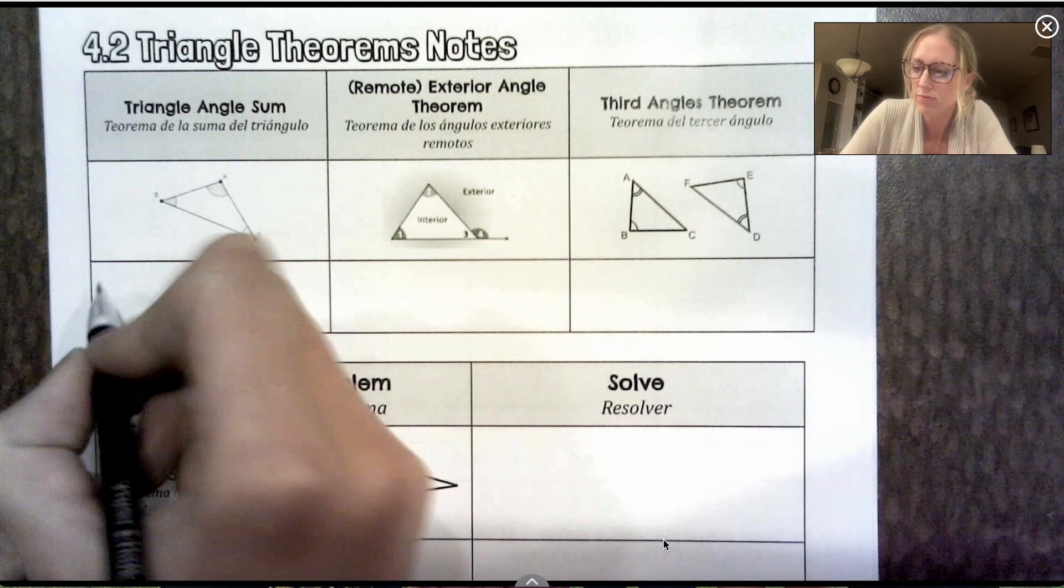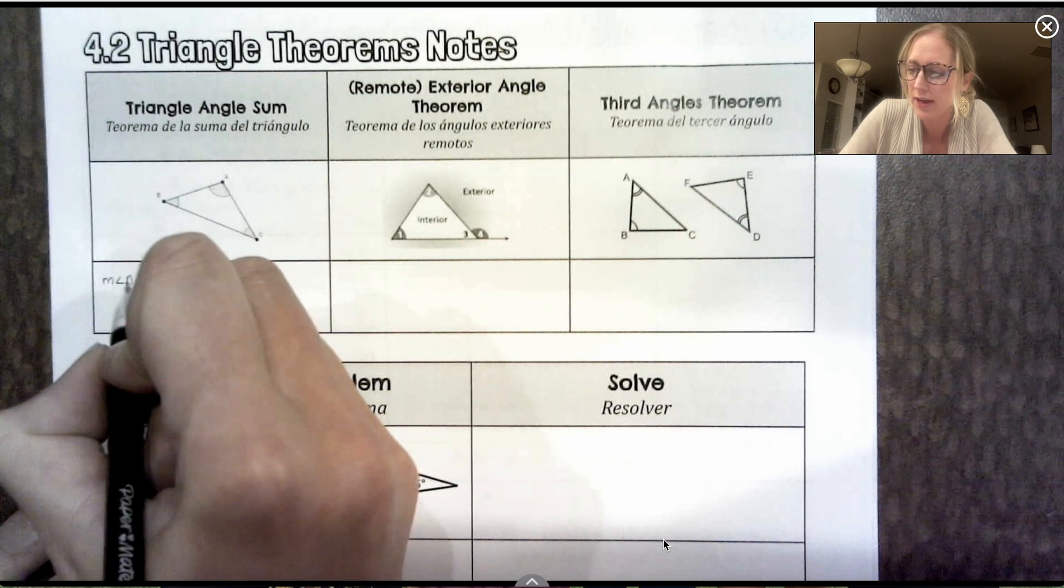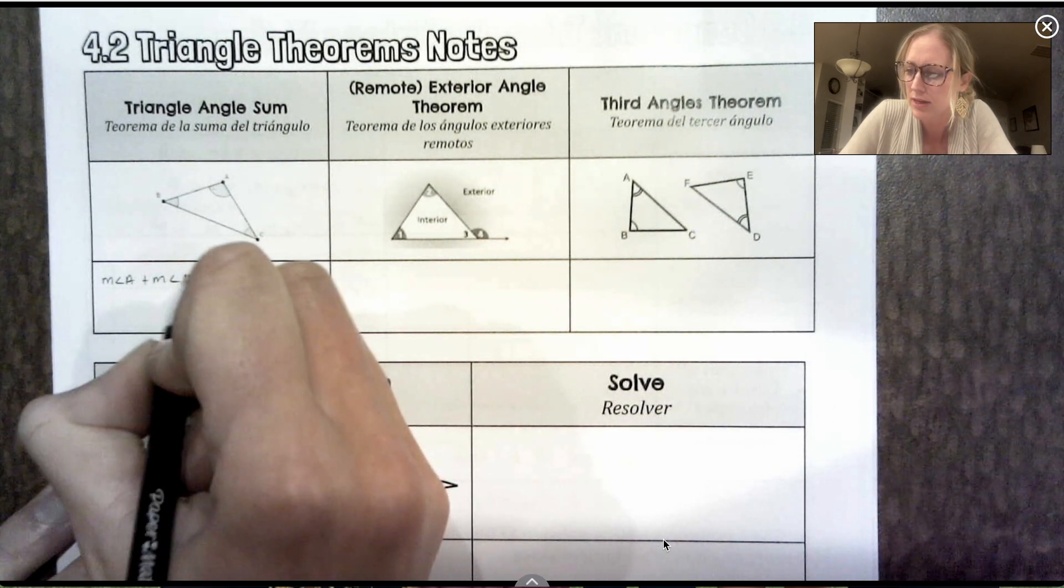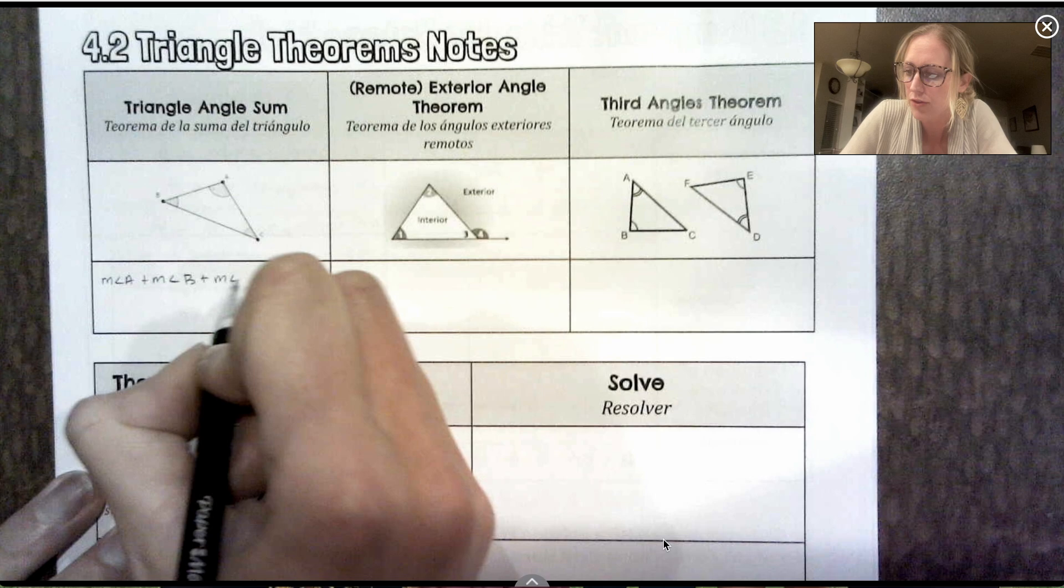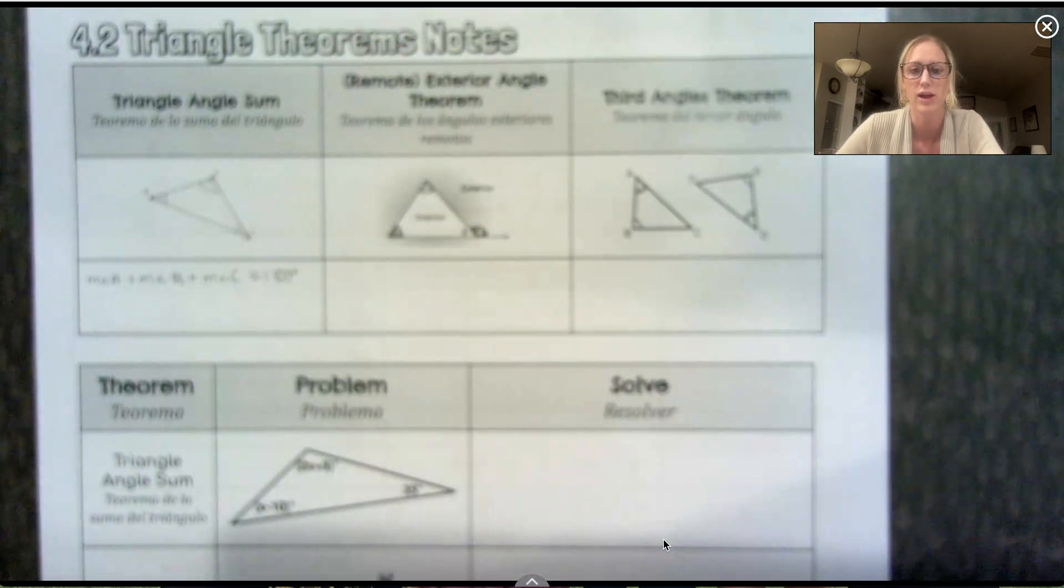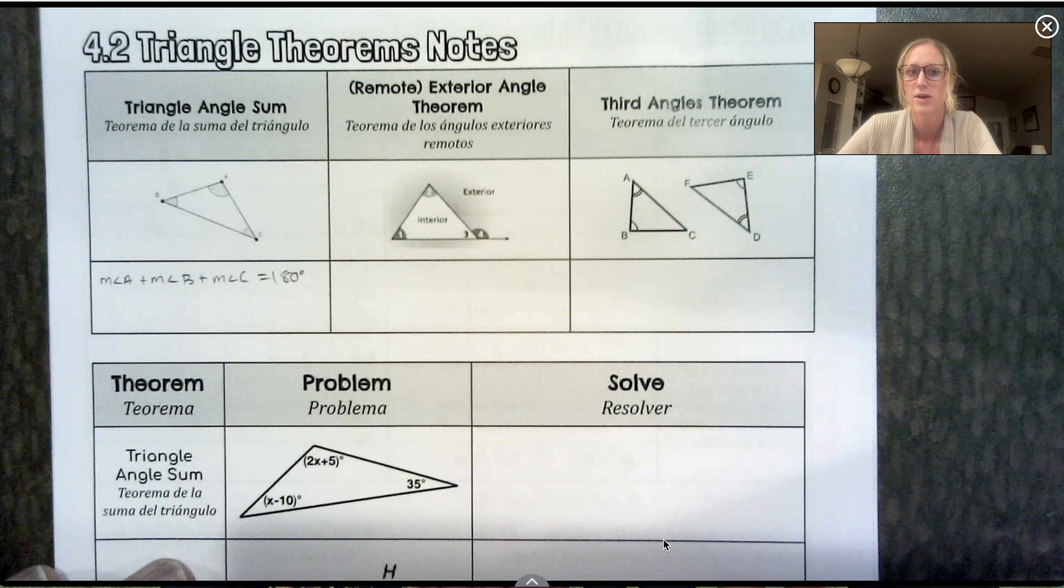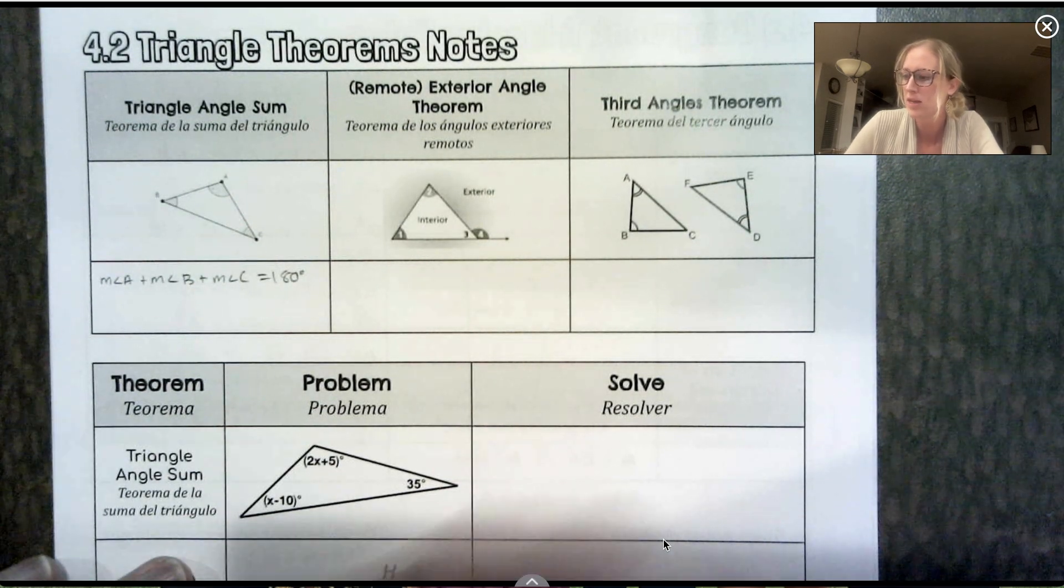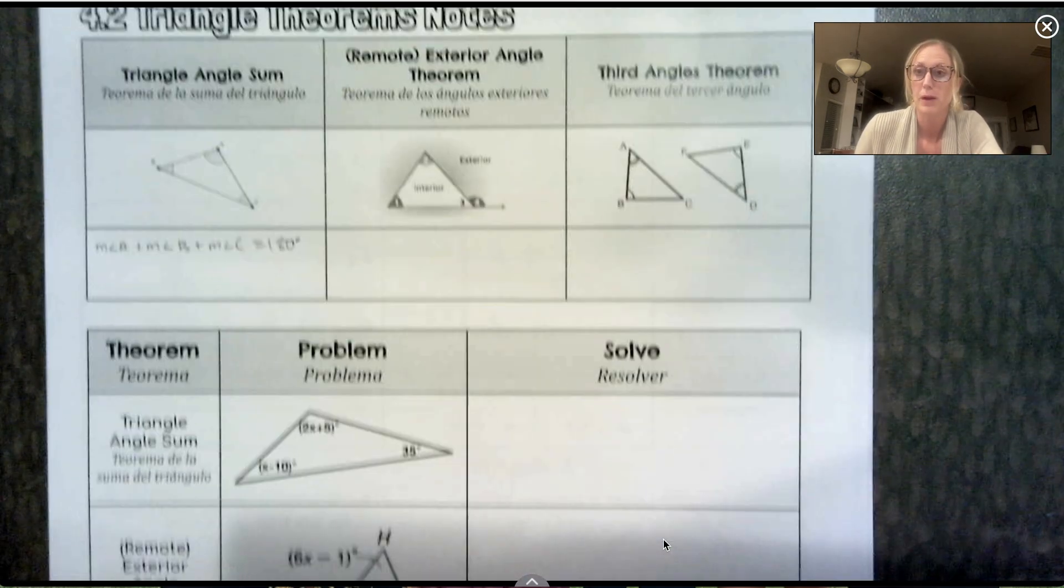So for this picture, I would have the measure of angle A plus the measure of angle B plus the measure of angle C, all three of them have to add to 180. So that is true for any triangle. All three of those angles must add to 180. Let's do a problem with that.